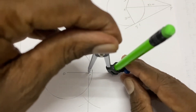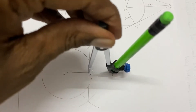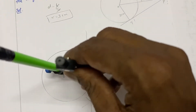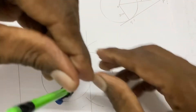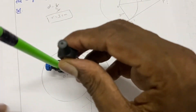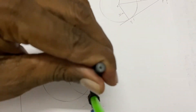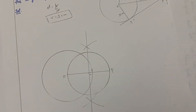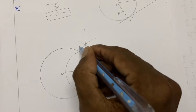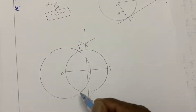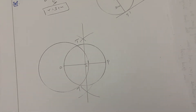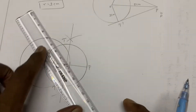Draw a circle with the bisector point as center. The two circles intersect at two points — label these T and T-dash. Join T to P: this is the tangent line.